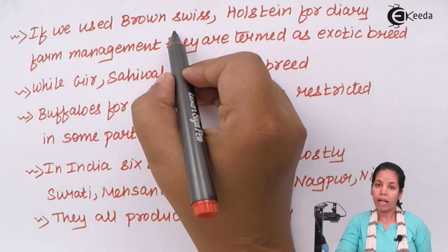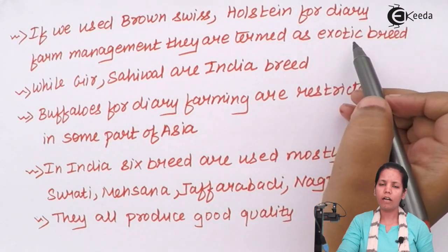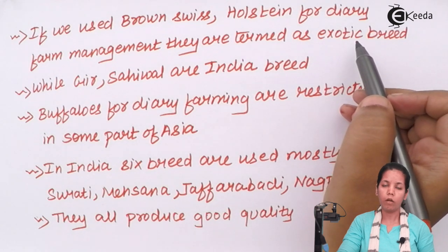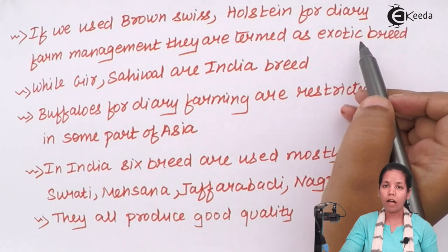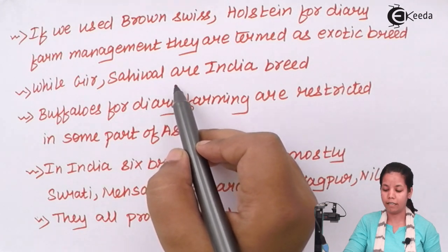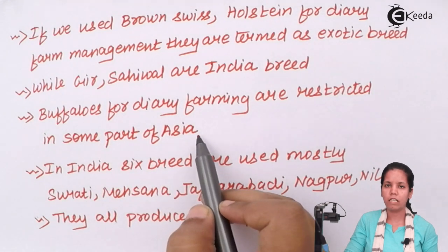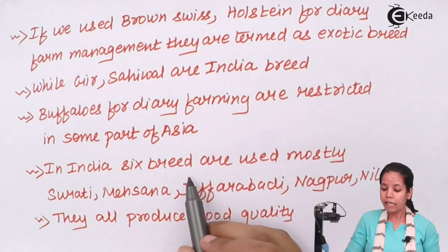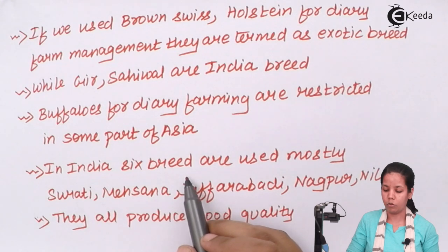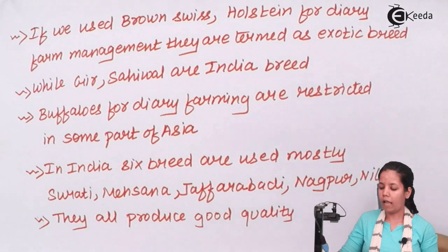Cattle like Brown Swiss are exotic breeds not available in India — we have imported them from abroad. Whereas our Indian native breeds include Gir and Sahewal, which have originated in India. For dairy farm management in India, six different varieties of buffalo cattle are used: Surti, Maisana, Jafrabadi, Nagpuri, and Neel. All these animals have a tendency to produce very good quality and quantity of milk.